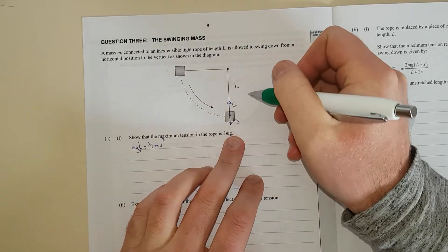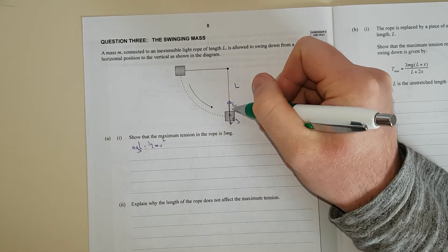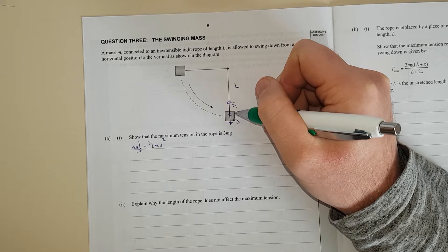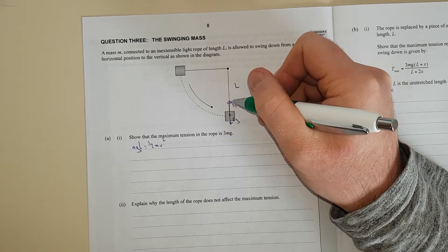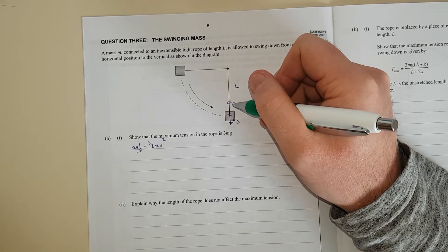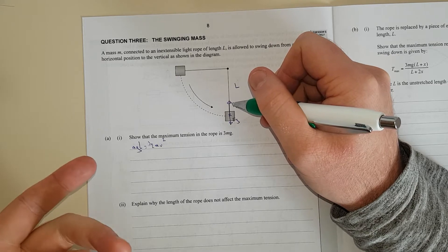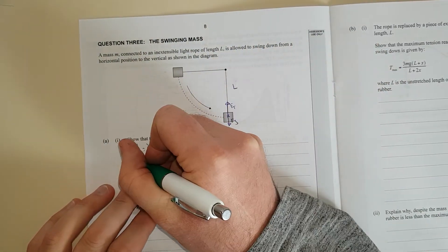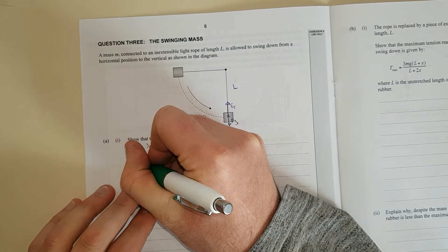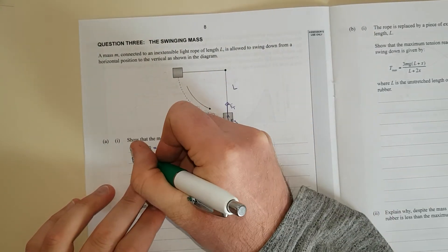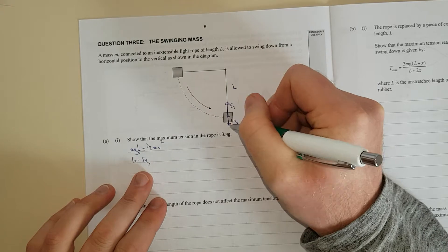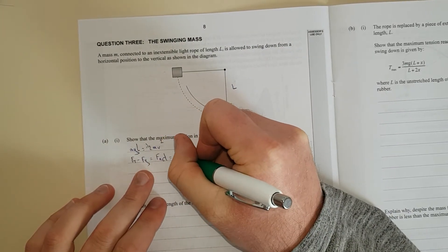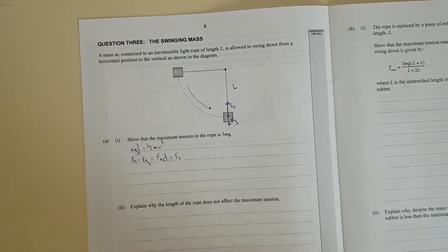And because it's going in a circle, Ft must be bigger than Fg. The tension force must be bigger than the gravitational force. The net force has to be greater than zero and that's going to be equal to the centripetal force which is Fc.